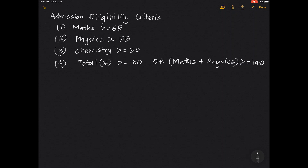Today we're going to look at a program that decides the eligibility of a student for admission based on certain conditions. We have four conditions: the first three specify criteria for marks of three subjects, and the last condition states that either the total marks of three subjects should exceed 180, or the sum of maths and physics marks should exceed 140. We can implement this using nested if statements or by combining conditions using logical AND and logical OR.